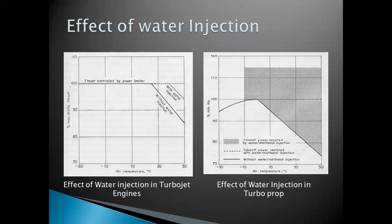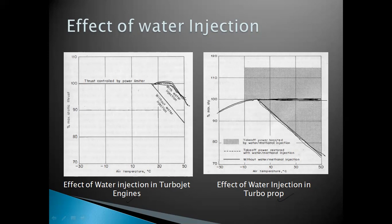Looking at the effect of water injection on a turbojet engine: at static conditions there is a maximum thrust, but as temperature increases, the thrust rating without water injection is seen to decrease. If we use water injection, the thrust rating goes up. The same thing happens with the turboprop engine — as temperature increases, the shaft thrust produced by the turboprop engine starts dropping. Using a water injection method or a water-methanol mixture restores the thrust rating, so at higher temperatures you still get proper thrust.